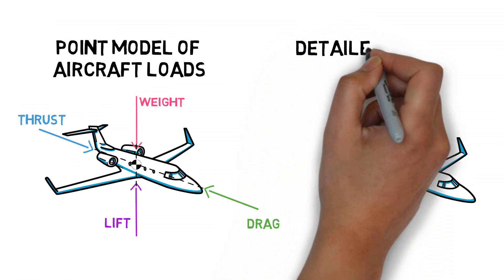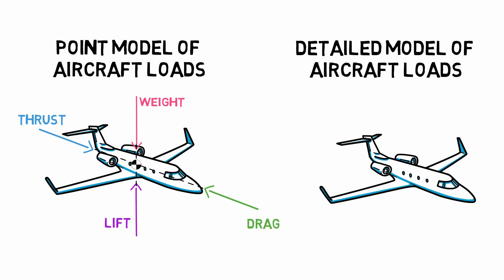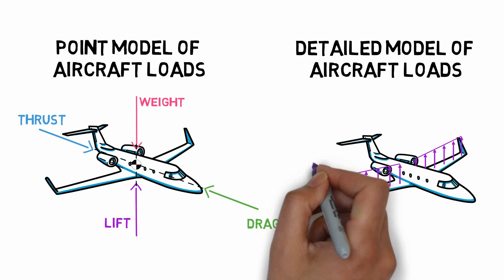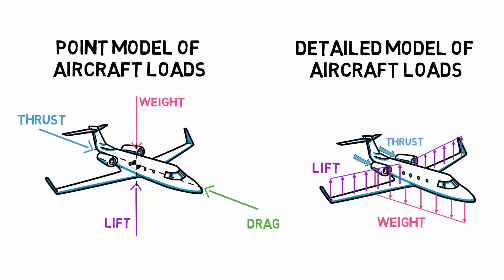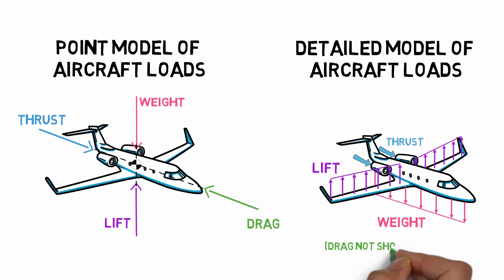When we need to assess structures and materials, this representation doesn't work. What you see here is a more representative illustration of the external loads on the aircraft. The lift is generated by the wings, not by the fuselage, while the weight is mostly dictated by the fuselage. These loads are not concentrated loads but are distributed over surfaces — for instance, the lift is distributed over the whole wing. The thrust is locally introduced by the engines, while the drag is generated by the whole aircraft.